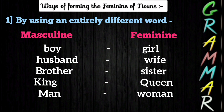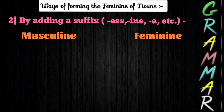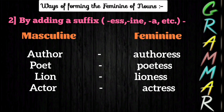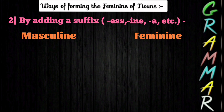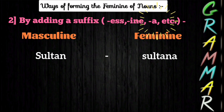The second way for conversion is by adding a suffix such as '-ess', '-ine', or '-a'. For example, the feminine gender for 'author' is 'authoress', for 'poet' is 'poetess', for 'lion' is 'lioness', and for 'actor' is 'actress' — here we are adding the suffix '-ess'. The feminine gender for 'hero' is 'heroine', adding the suffix '-ine'. For 'sultan' it is 'sultana', adding the suffix '-a'.